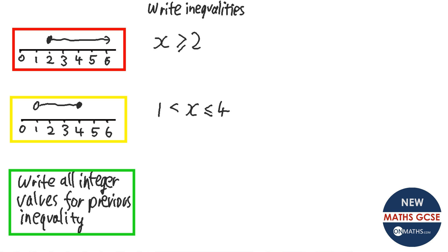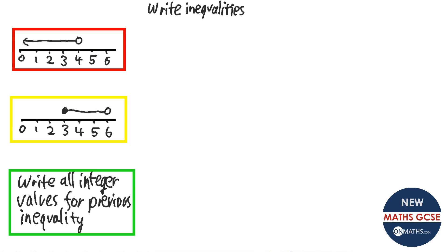It's really common with inequalities to be asked to write down all the integer values. Integers just mean whole numbers. So if I had to write every number between 1 and 4, it would take forever — there are infinite numbers. But the whole numbers are easy. Starting from 1: it can't equal 1, so I miss that out. So: 2, 3. Can it be 4? It says it can be equal to 4, so yes — but it can't be any more.